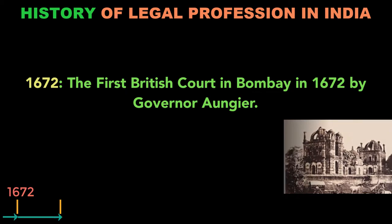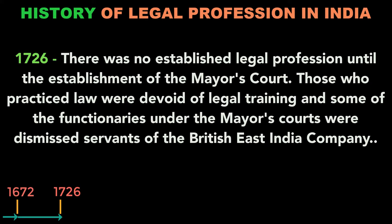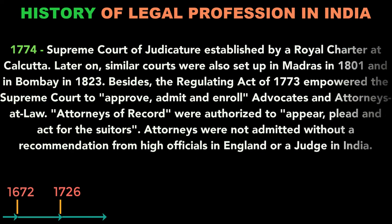The next important date is 1726. There was no established legal profession until the establishment of the Mayor's Court, which was set up in 1726. Those who practiced law were devoid of legal training, and some of the functionaries under the Mayor's Court were dismissed servants of the British East India Company — not actually trained or qualified lawyers, but rather civil servants who were dismissed or retired.